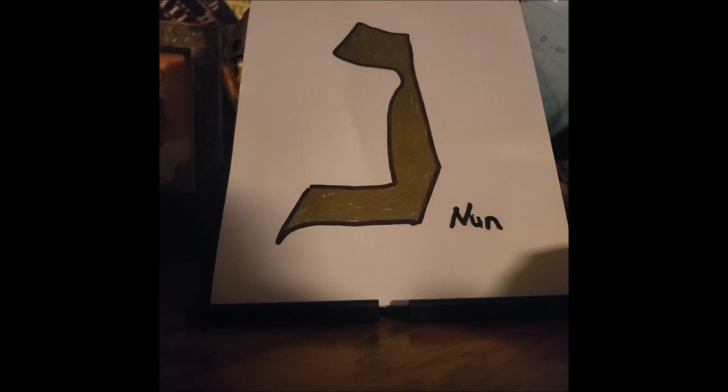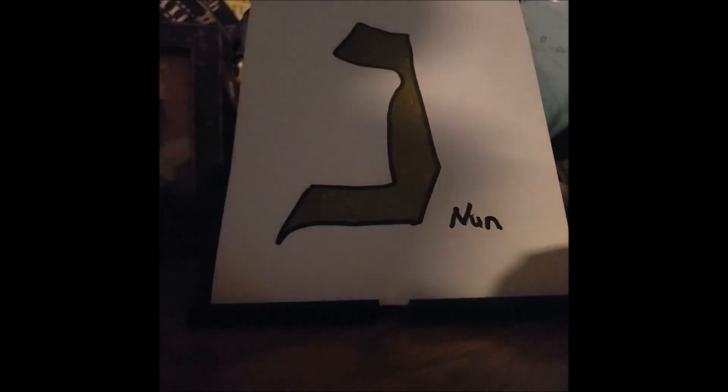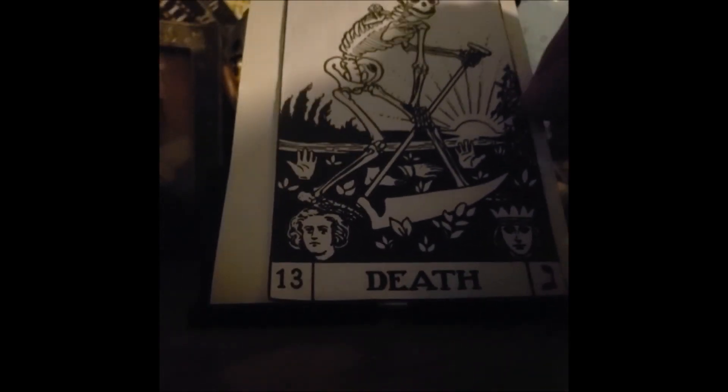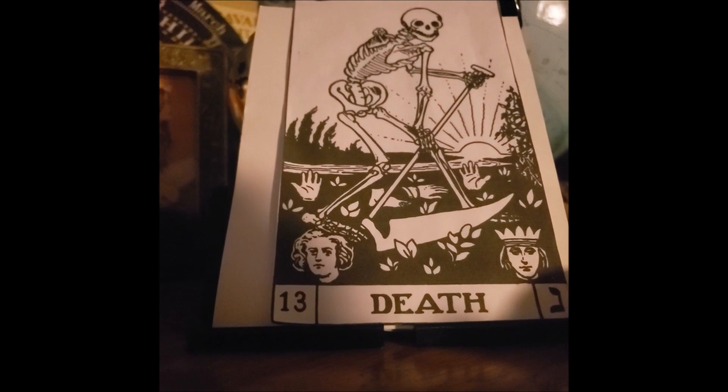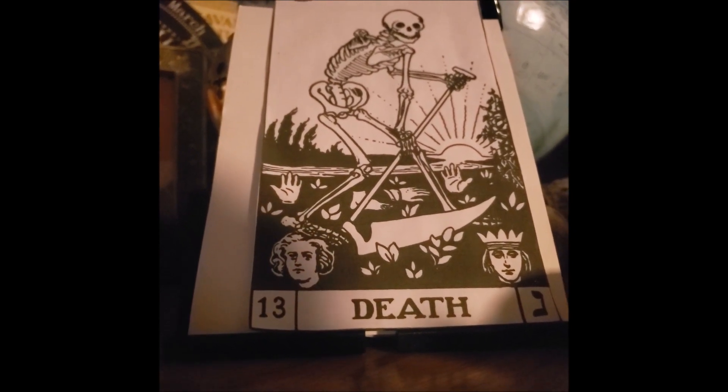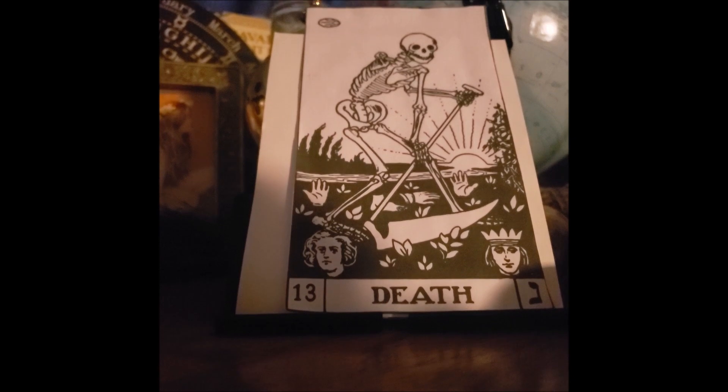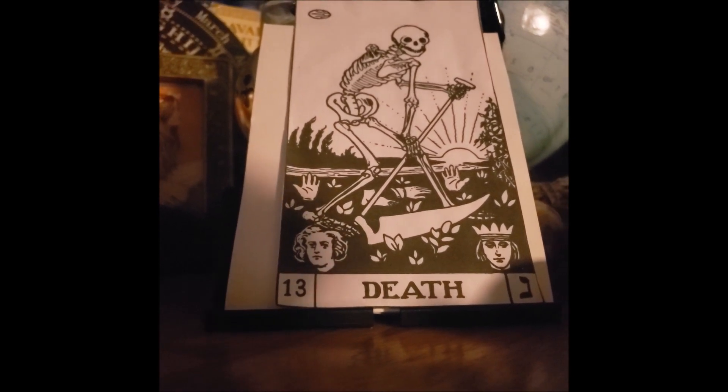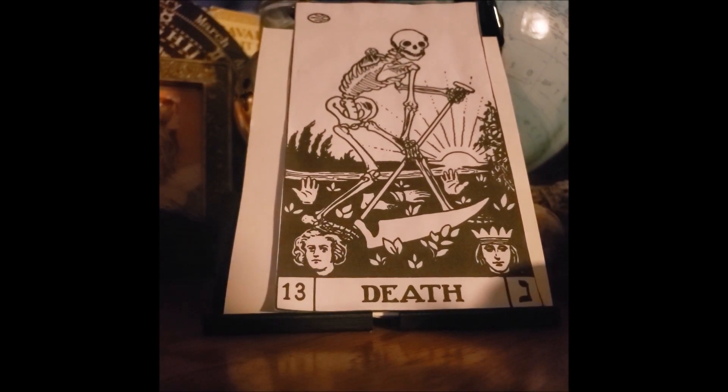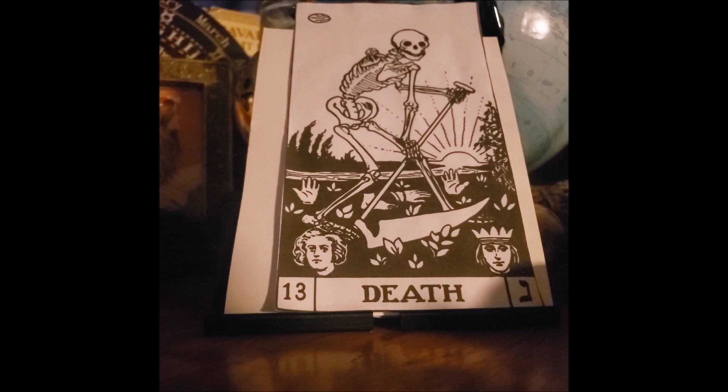Now our tarot card for this new moon is number 13, the Death card. You can see there's a little comet up there. Let me get this up a little bit so we can see the comet. And here we have an interesting scene. A lot of people become scared looking at the Death card. 13 is a number of completion, but it has a lot of fear around it too. The Death card is actually a card of rebirth. Some say that when we die to the flesh we are born to spirit.